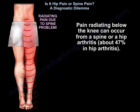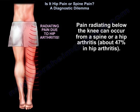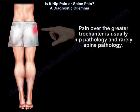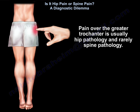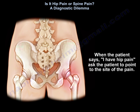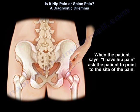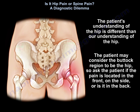Pain radiating below the knee can occur from a spine condition or hip arthritis — about 47 percent in hip arthritis. Pain over the greater trochanter is usually hip pathology and rarely spine pathology. When patients say they have hip pain, ask them to point at the site. The patient's understanding of the hip differs from ours — patients often think the buttock is the hip — so ask if the pain is in the front, the side, or the back.